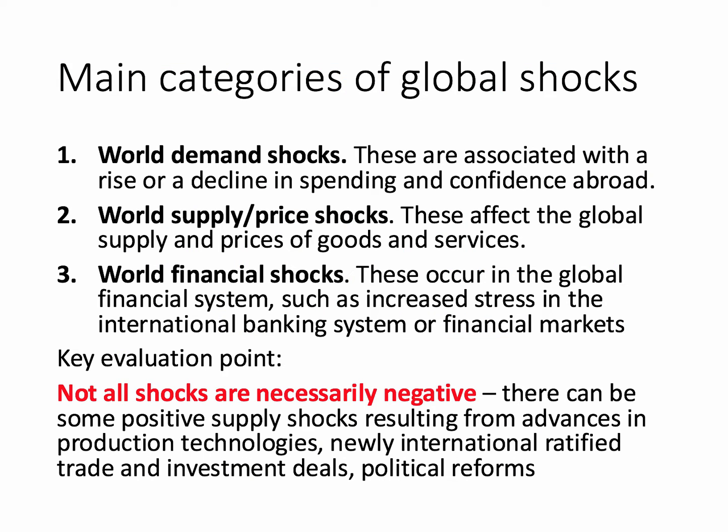We make a distinction between different types of shocks. World demand shocks are associated with an increase or fall in spending and confidence overseas — the Chinese economic slowdown is an example. There can be supply-side shocks affecting prices, the global supply and prices of particular goods and services — for example, the recent fall in the price of oil was a supply shock. And of course there can be systemic financial shocks in banking and credit markets, often reverberating right through the world financial system.